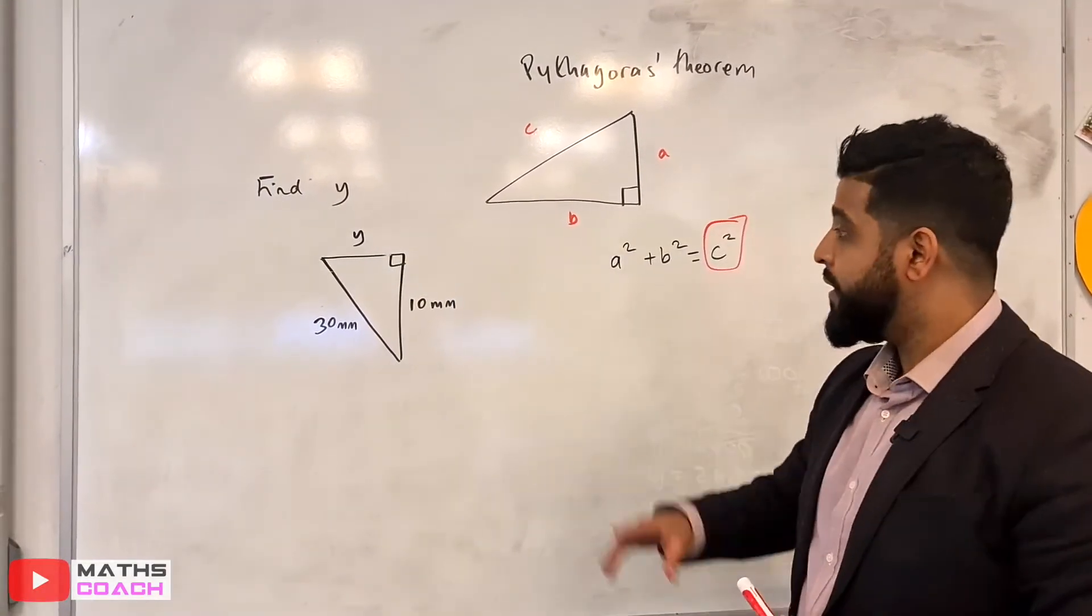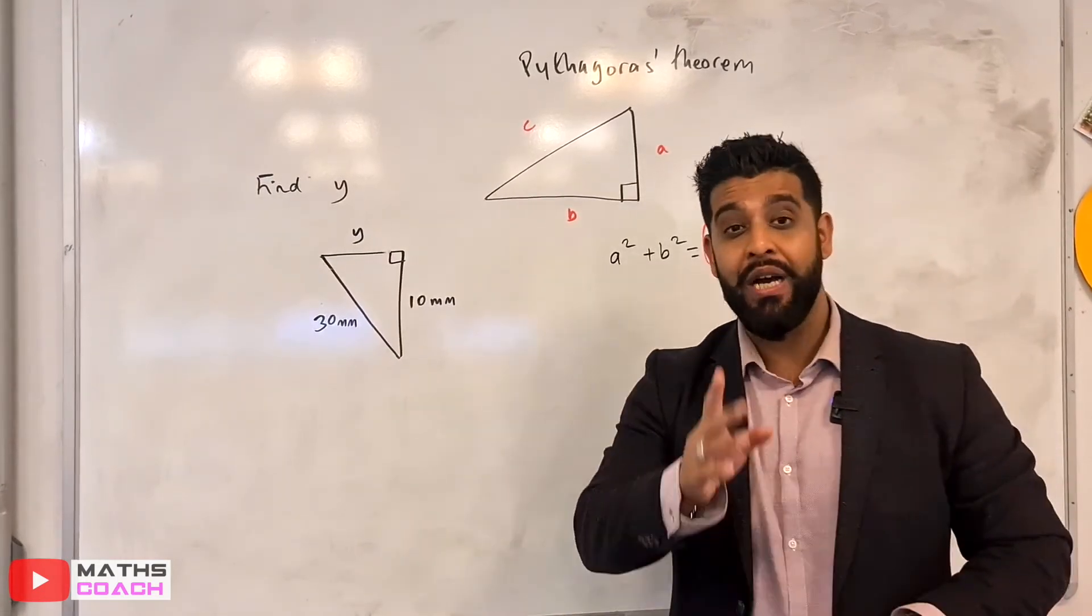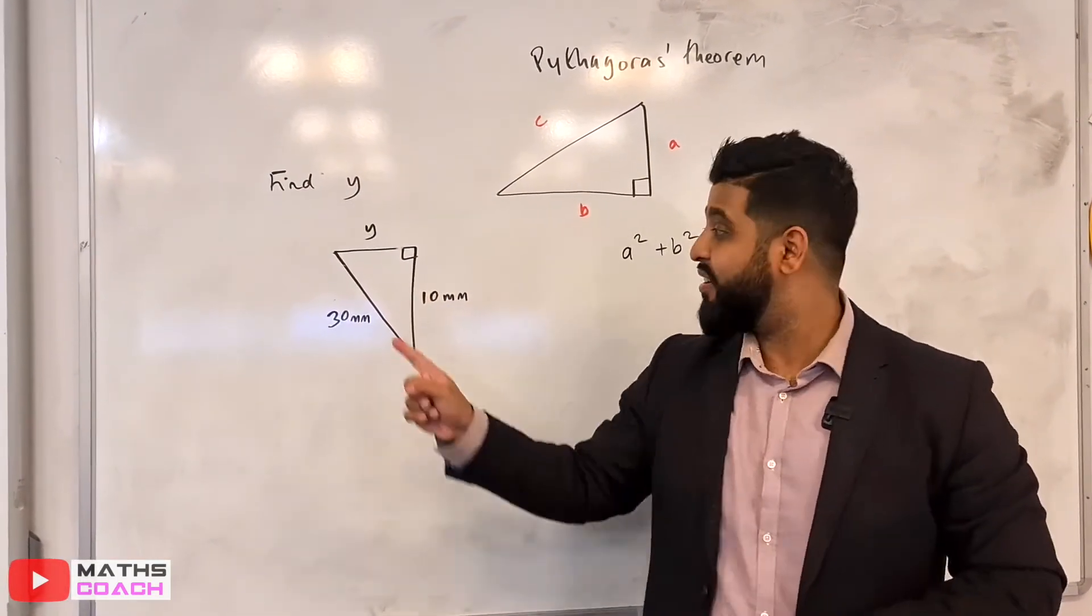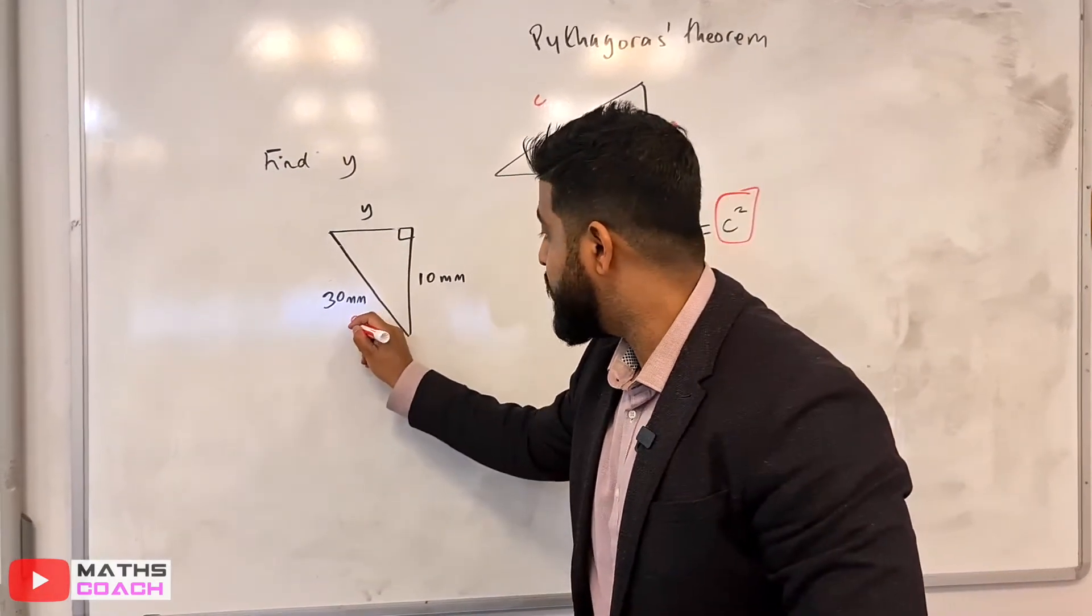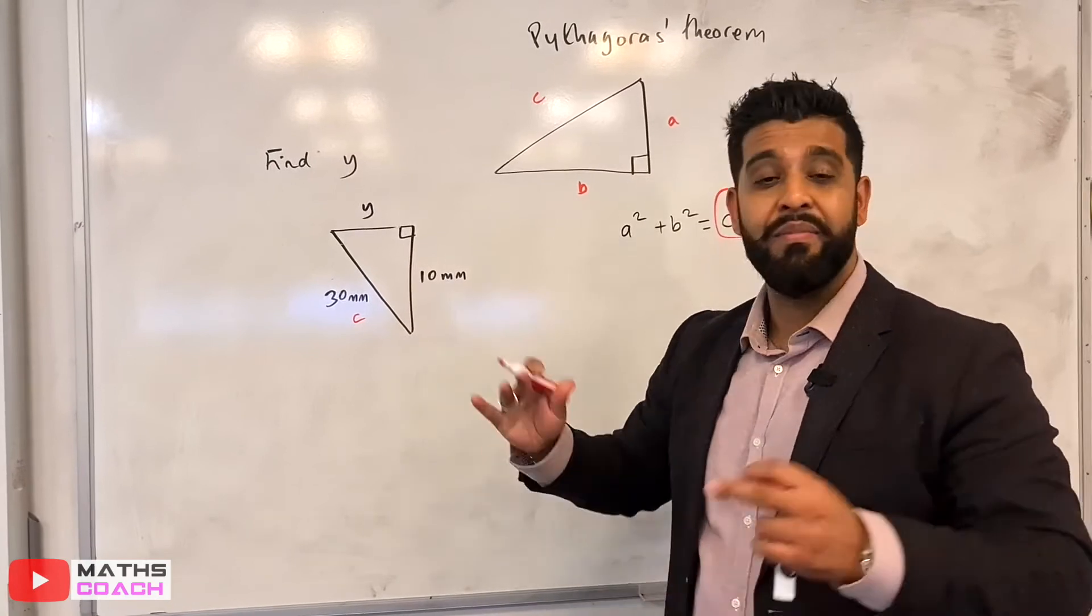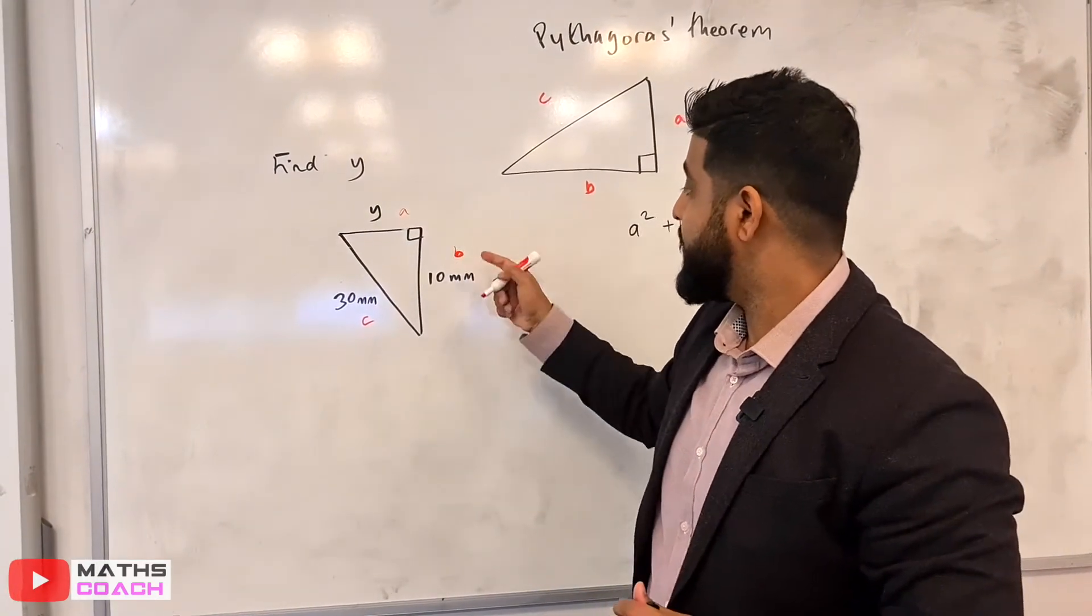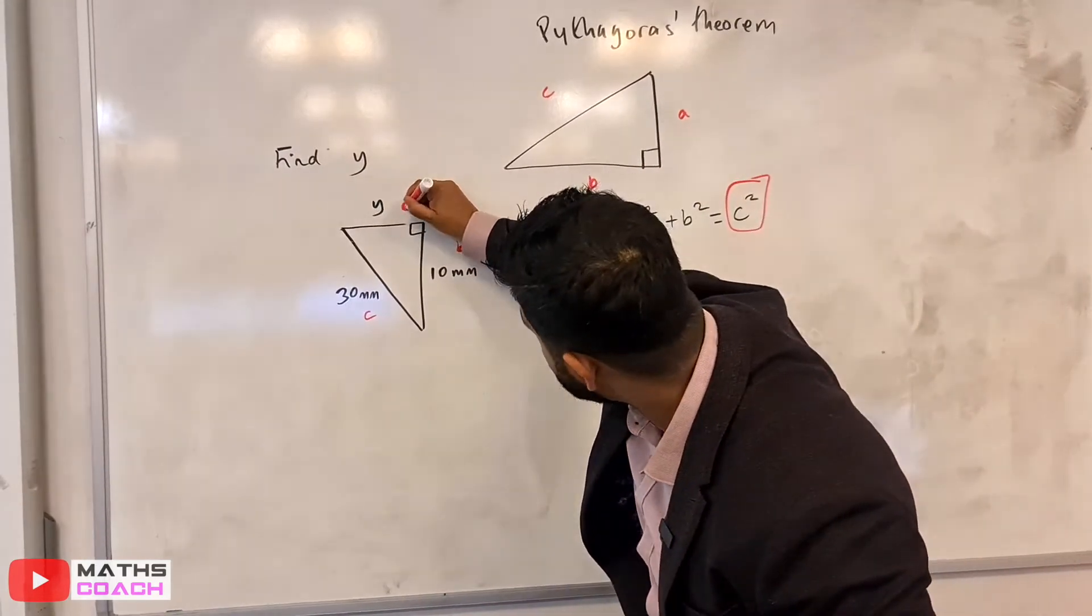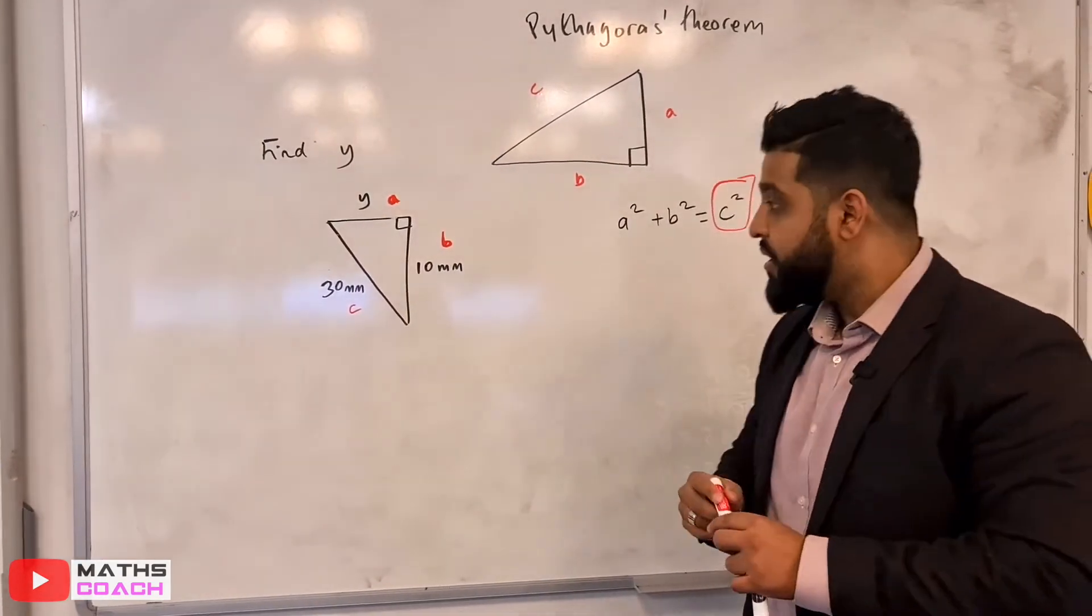Right. So let's go for it. So step number one, we are going to identify our hypotenuse, our longest side, our side which is opposite the right angle here. So in this case, it is this 30 millimeter. I'm going to call that C. And the other two, it doesn't matter which way around I label it. I can label this one A and this one B or this one A and this one B. Sorry about the handwriting.